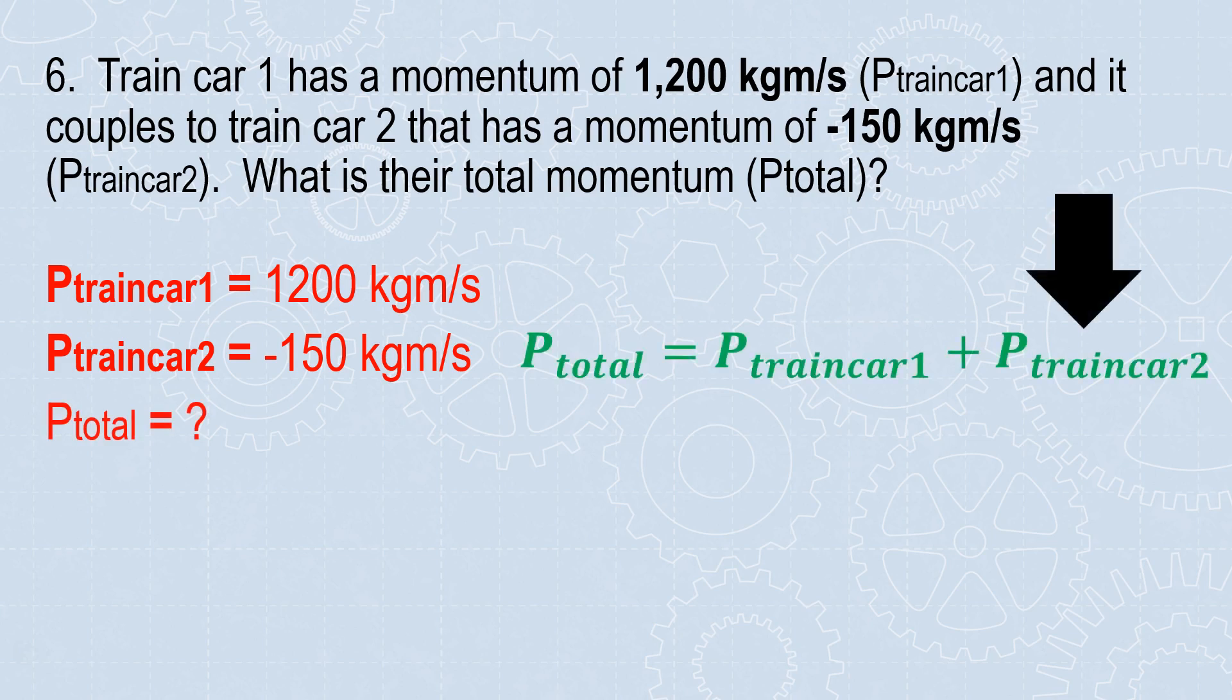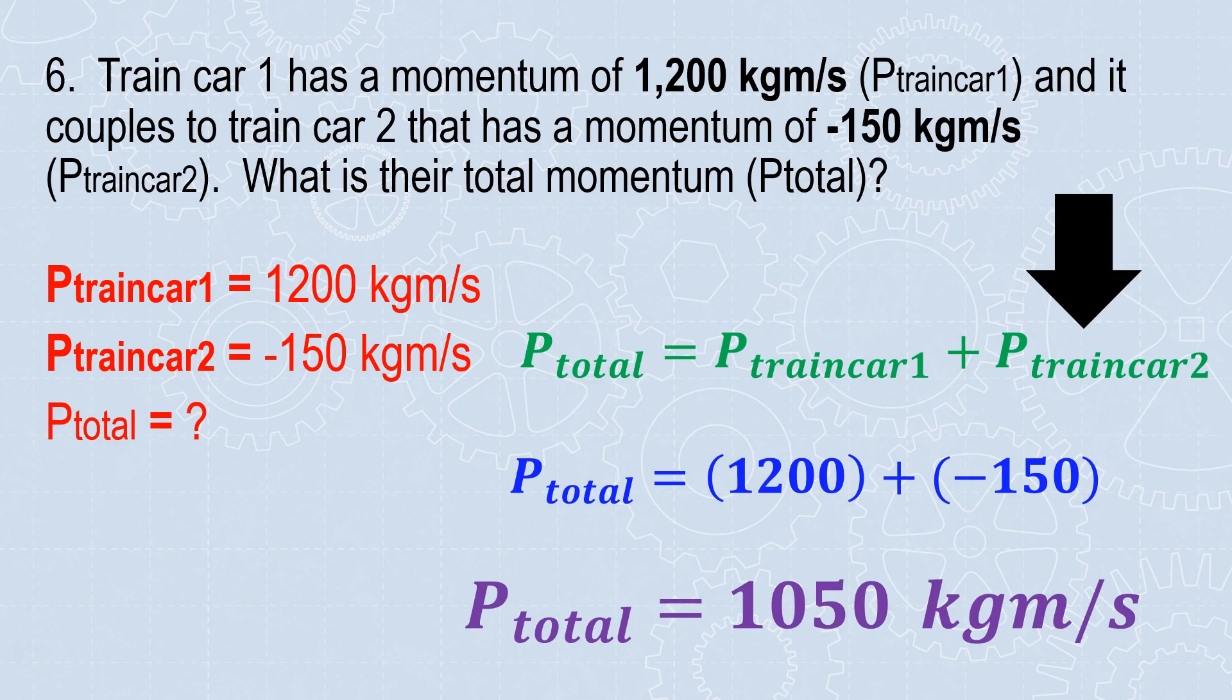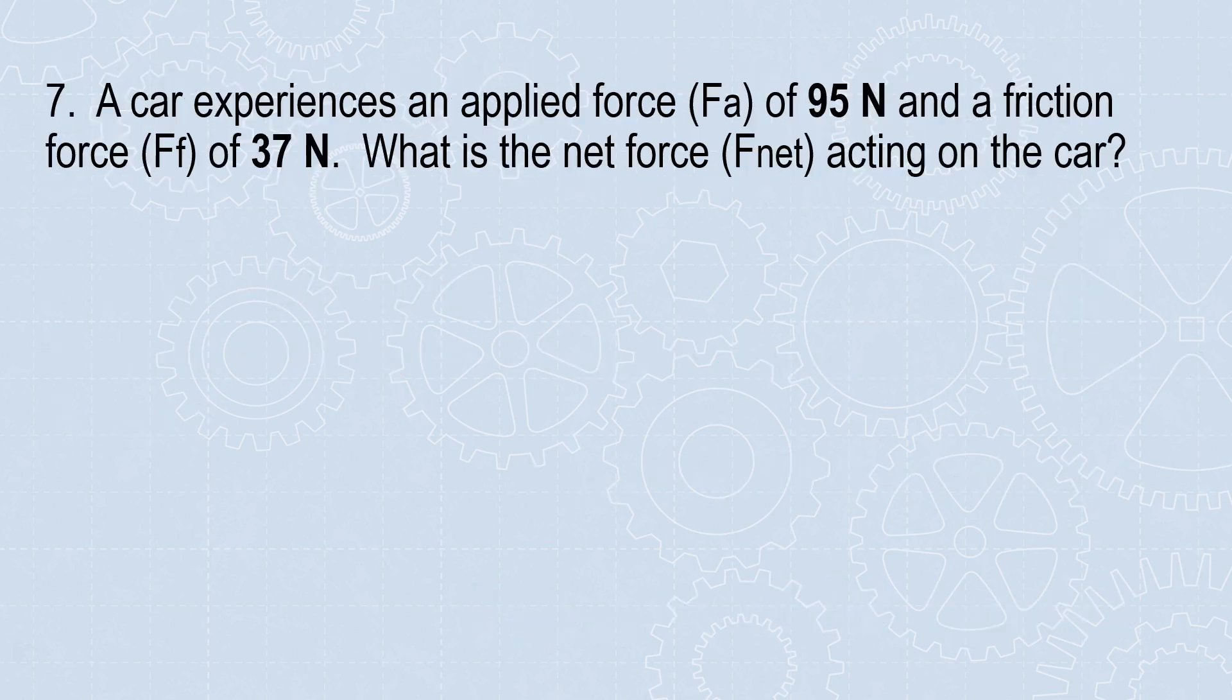There's the equation. Substitute in and evaluate. I'm going to plug in 1,200 for train car 1, negative 150 for the momentum of train car 2. Put them together. Total momentum is 1,050 kilogram meters per second. Always finalize by checking your work and throwing a unit on your answer.